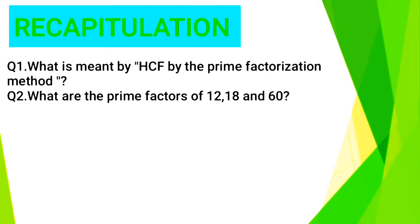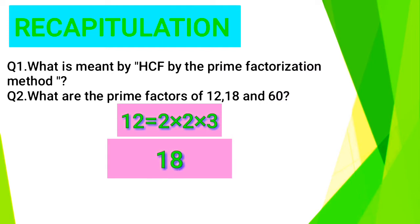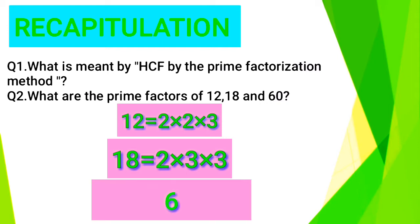Question number 2: What are the prime factors of 12, 18 and 60? So, the answer is: Prime factors of 12 are 2 × 2 × 3. And the prime factors of 18 are 2 × 3 × 3. And the prime factors of 60 are 2 × 2 × 3 × 5.